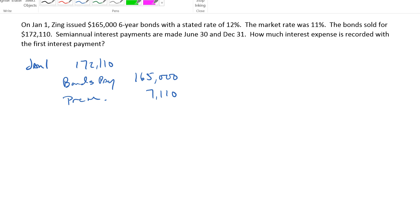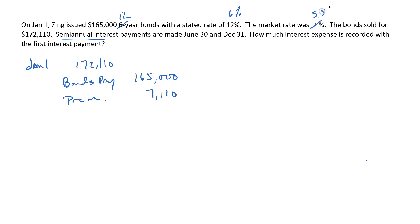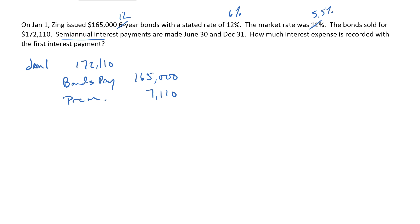Now, how did we come up with the 172,110? We used our present value tables — we doubled the periods because it's semi-annual, we halved the stated rate, and we halved the market rate. You probably noticed on the present value tables there is very rarely a 5.5% rate. That's in theory how we did it, but that's not how anybody really does this. No one uses present value tables anymore — that probably ended around the time of the invention of the financial calculator, so around the 80s.